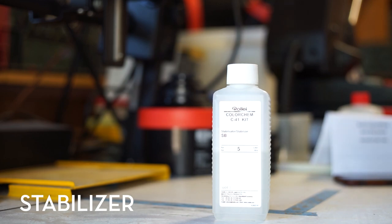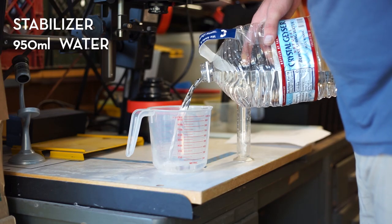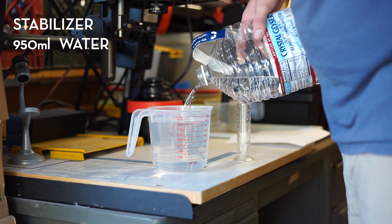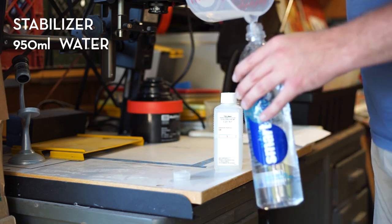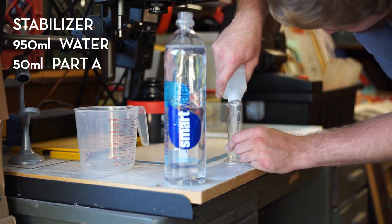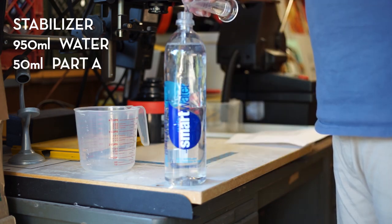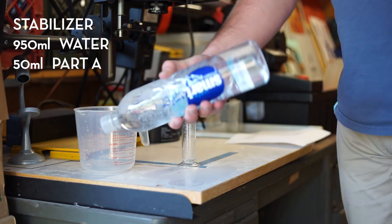After you're done mixing up the blix, then you're gonna switch over to stabilizer. Stabilizer is similar to photo flow in a way, but it's for color film. So you mix it up, it's mostly just water and then a little bit of stabilizer. This is what you're going to dip your film in after you've washed it all.